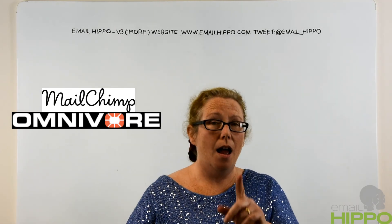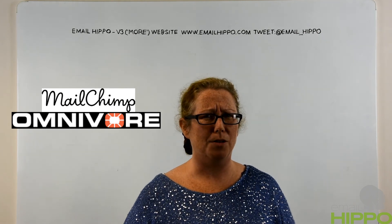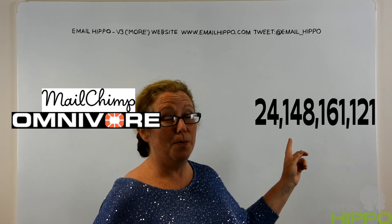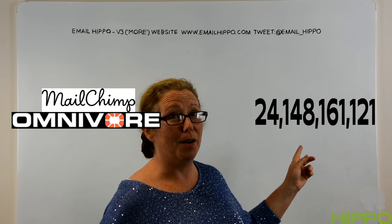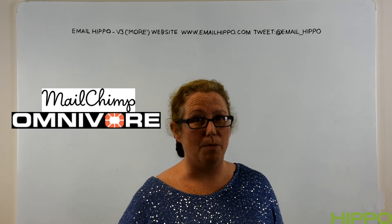So there you go — in two minutes, that's how you get rid of an Omnivore warning. Just a thought: I'm saying that MailChimp knows all about emails. I have a big number for you to end on: 24,148,161,121 — that's how many emails MailChimp sent in 2016. So trust it, trust Omnivore, don't get grumpy, just clean your data. Thank you.